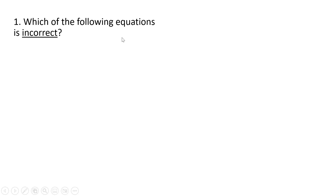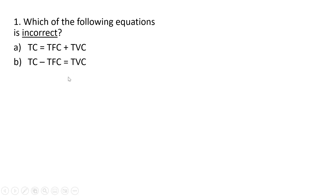Question one: which of the following equations is incorrect? Total cost equals total fixed cost plus total variable cost — that is correct. Total cost minus total fixed cost equals total variable cost — that is also correct. If we take total fixed cost and subtract it from both sides of answer A, we get answer B, so that is correct.